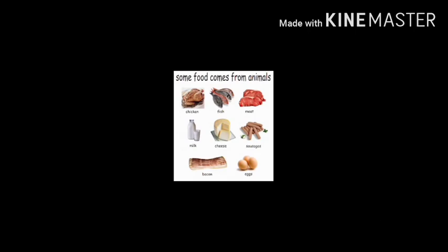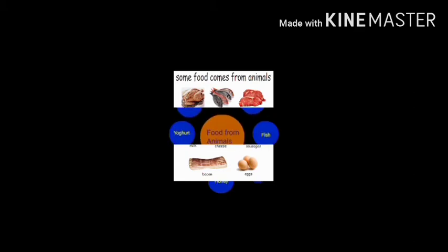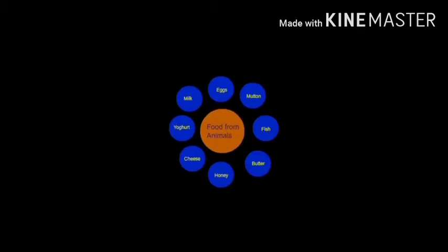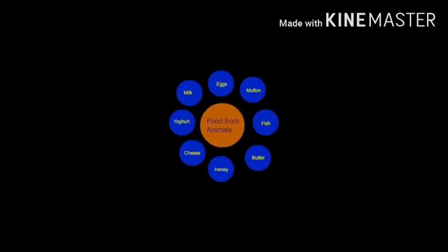Some food also comes from animals, like meat, fish, and dairy products such as cheese and curd.